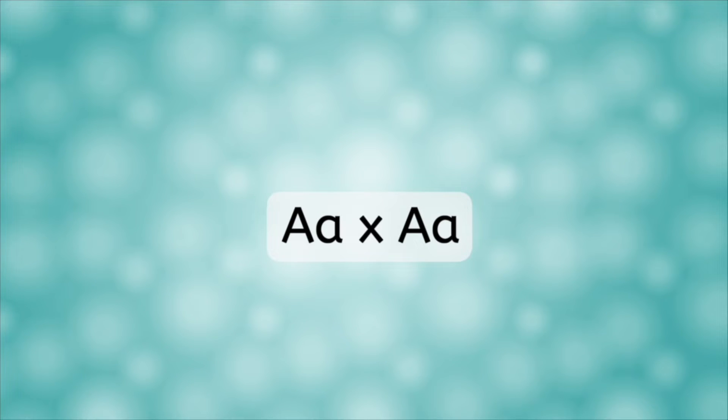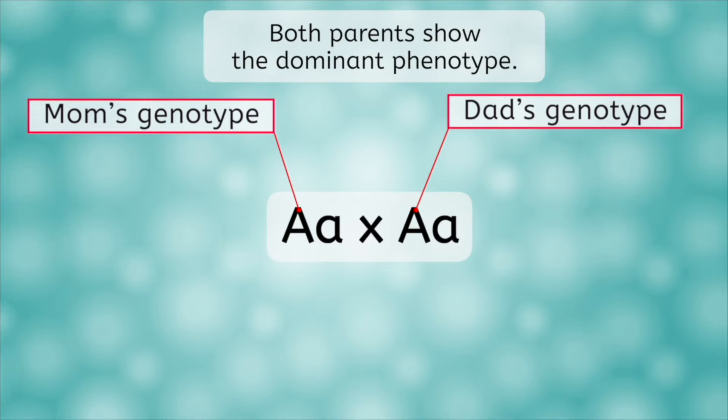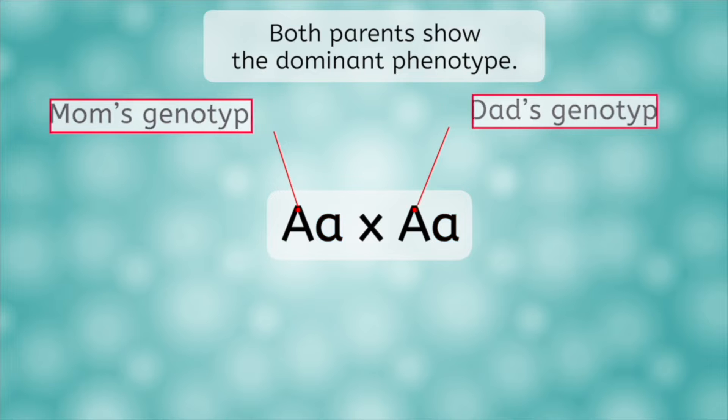In the example we're going to try first, we will predict the outcome when two heterozygous organisms are crossed. So the genotype of both parents is big A, little a. Note that both parents here would show the dominant phenotype, though they do both carry a recessive allele that could be passed on to their offspring. Let's see what happens.